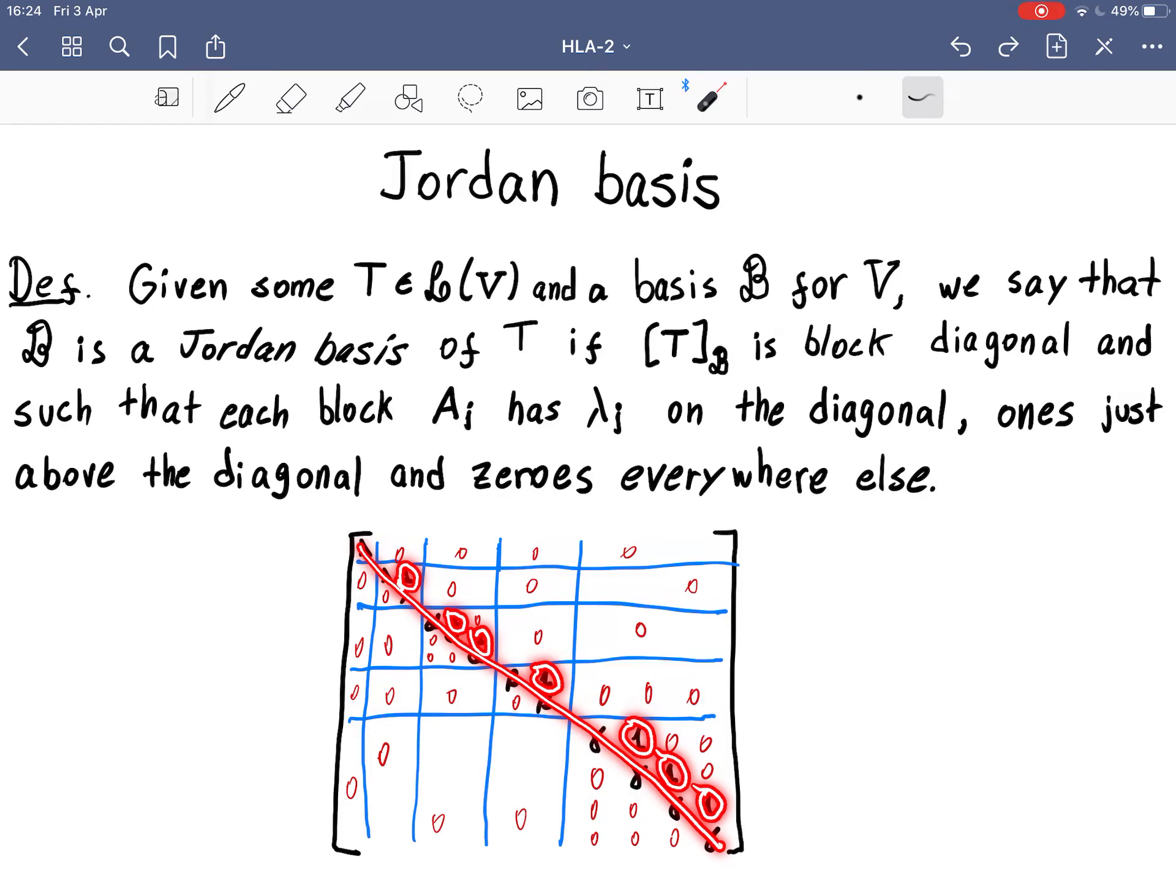Nothing else. Everything else is zero, including this element here, which is part of the block, is zero. These three elements here, they are zero. And this is the simplest form you can hope for if you want to give a description that works for every operator. And that's a Jordan form.